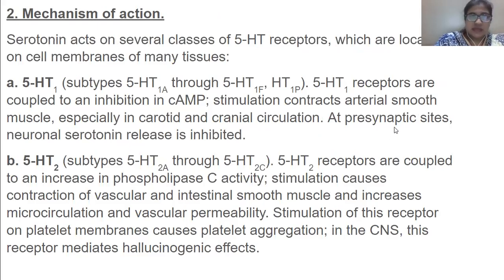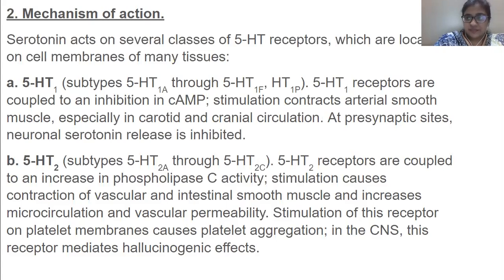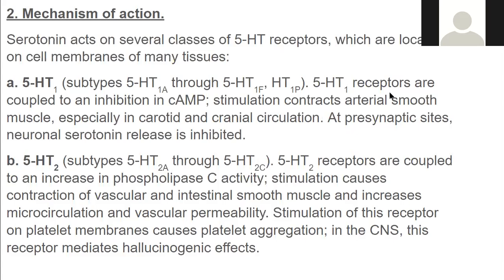Regarding mechanism of action, serotonin acts through several receptor classes. We have 5-HT1 receptors, which have subtypes 1A through 1F and 1P. 5-HT1 receptors are coupled to inhibition of cAMP, stimulate contraction of arterial smooth muscle especially in carotid and cranial circulation, and at pre-synaptic sites, neuronal serotonin release is inhibited.